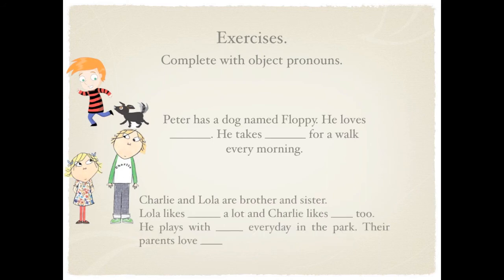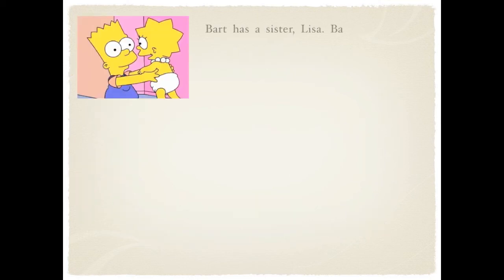We have the other text about Charlie. He loves him — the dog. He takes him for a walk — the dog. Lola likes him — Charlie. And Charlie likes her — Lola. He plays with her — Lola — every day in the park. Their parents love them — Charlie and Lola.